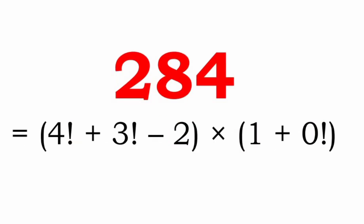If we allow the factorial operation, then 284 can be written as 4! plus 3! minus 2 into 1 plus 0!. Here factorial means the product of all the numbers from 1 up to that number — for example, 4! equals 1 into 2 into 3 into 4.